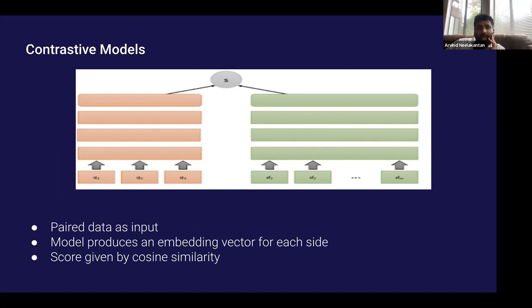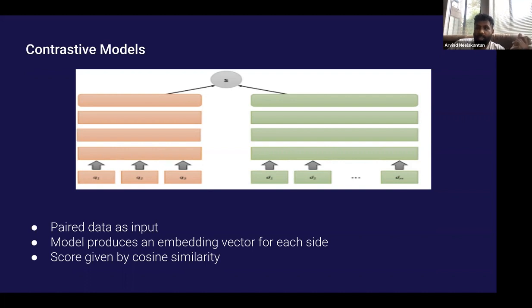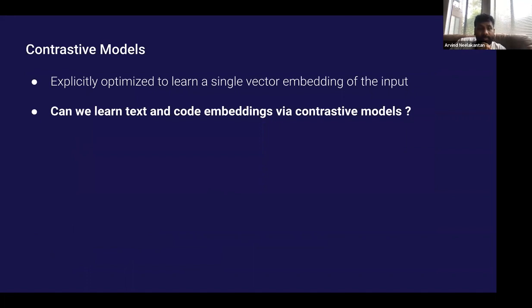Unlike generative models, there's a class of models called contrastive models. What they do is take paired data as input — the model produces a single embedding for each side, and then the similarity score is given by the cosine similarity between these two vectors. The most important takeaway is that these contrastive models are explicitly optimized to learn a single embedding of the input. The goal of this work is: can we learn high-quality text and code embeddings from unsupervised data with contrastive models?